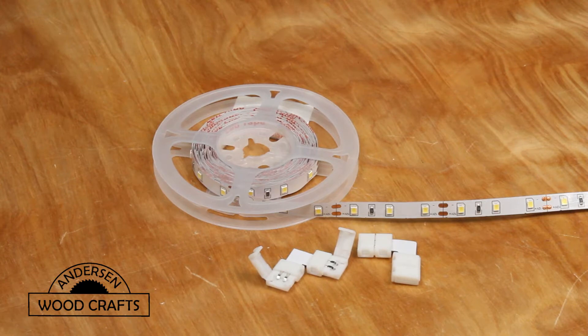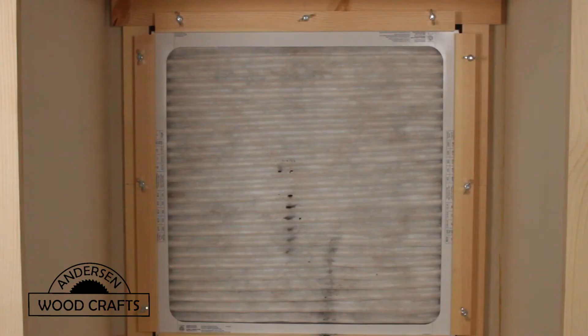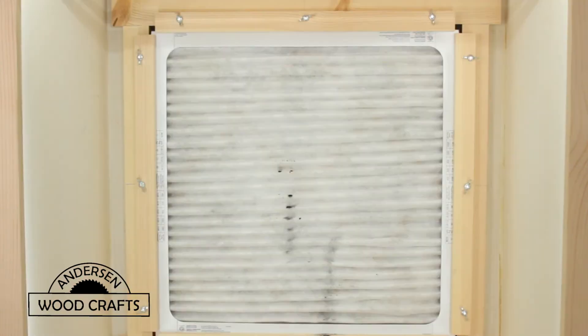Now the first thing I did, I put some inexpensive LED strip lighting into the booth. This way, I can see what I'm doing in the booth real easily. And as you can tell, it makes a huge difference when you turn those lights on.